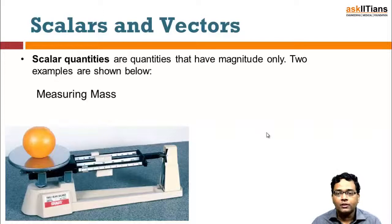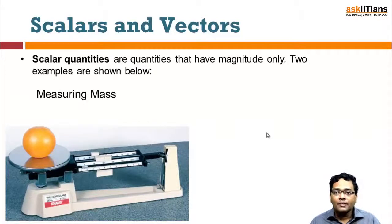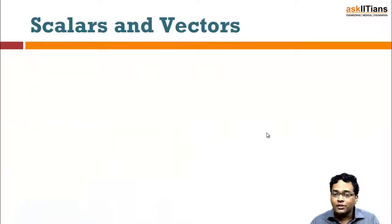For example, if we talk about mass. Mass, as I mentioned previously, does not need a direction to be specified. Mass is the base—it's basically the content any object has. That is how you define mass.